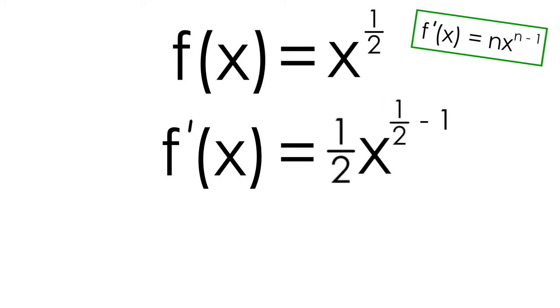We can take our exponent and bring it down in front, just like always. Subtracting 1 from the exponent results in a situation where I need a common denominator.